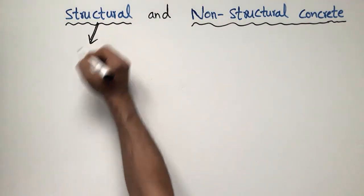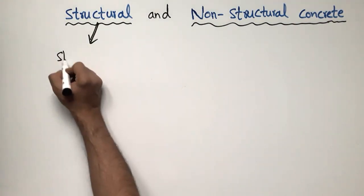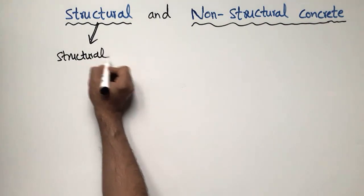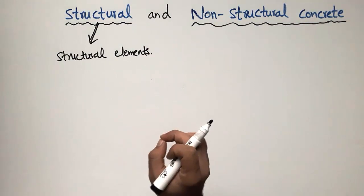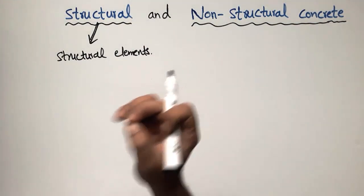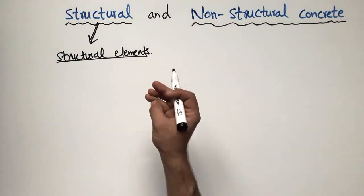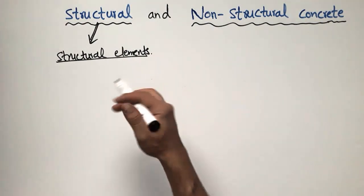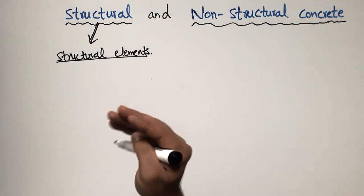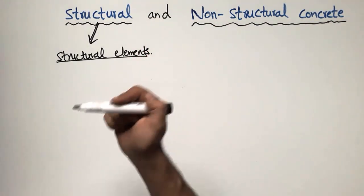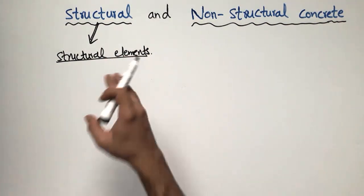Structural concrete is used for the construction of structural elements — those members which are responsible for taking the load and transferring the load. These are called structural elements. Examples include bridges, dams, residential buildings, multi-story buildings, tunnels, and so on.